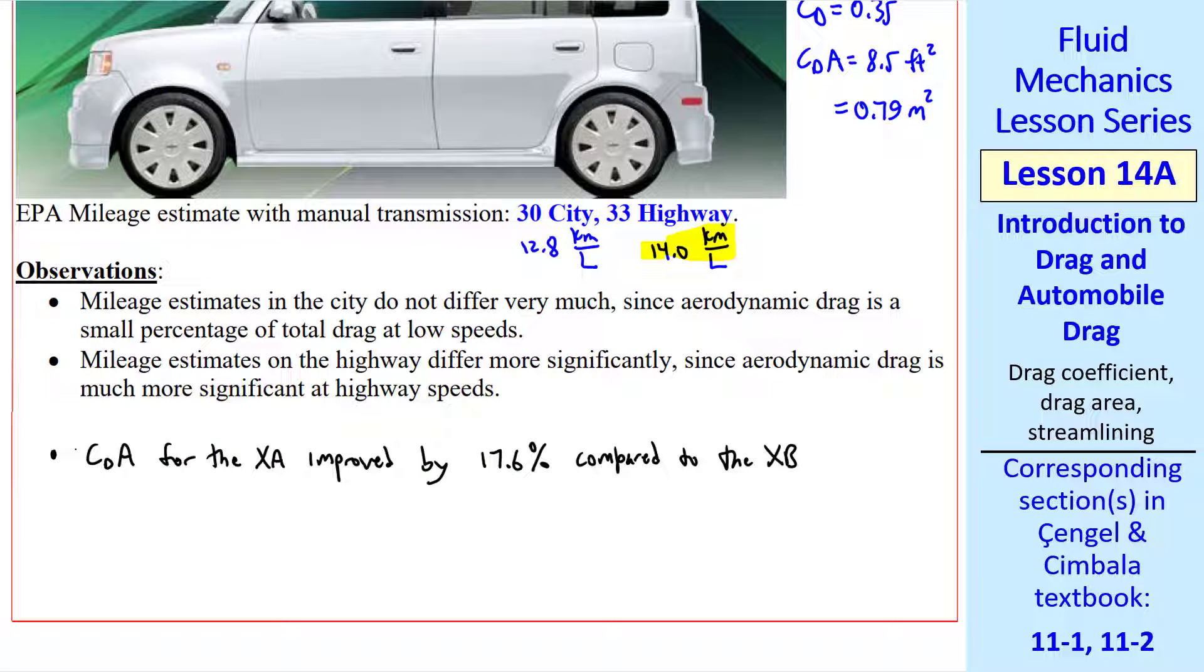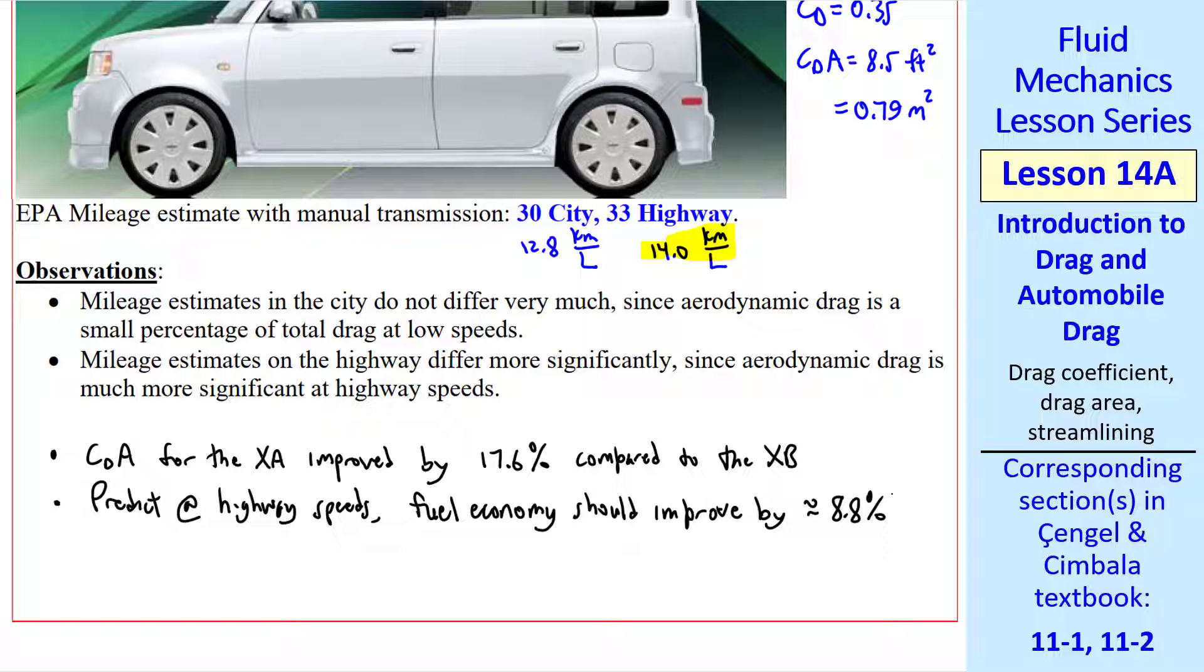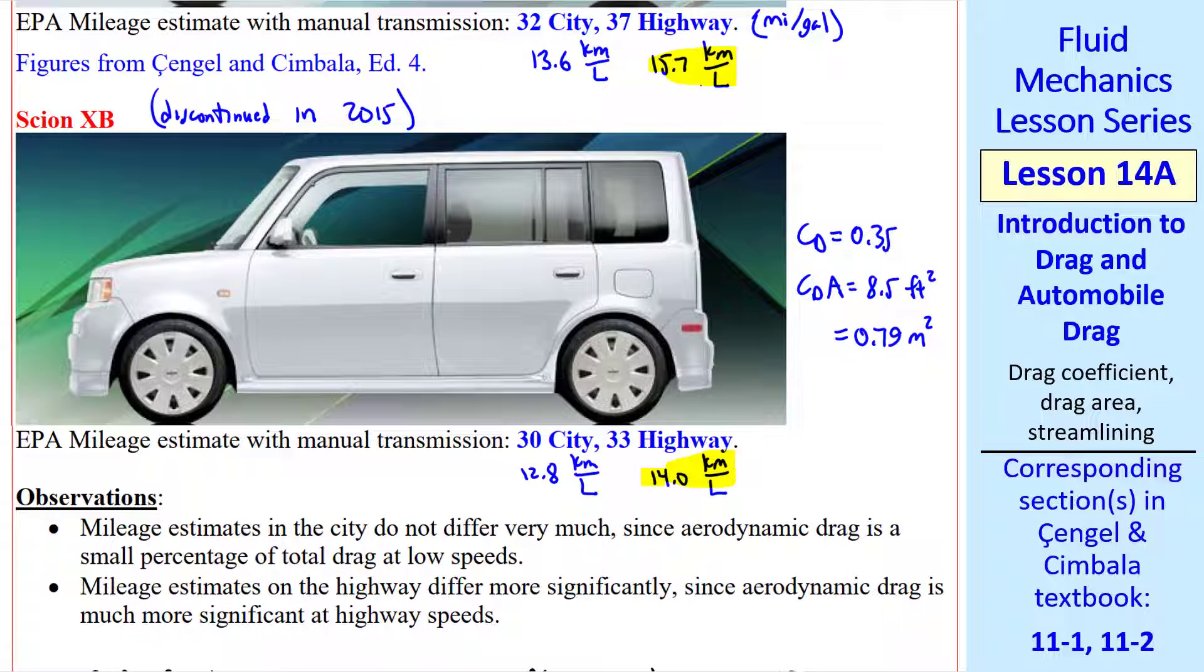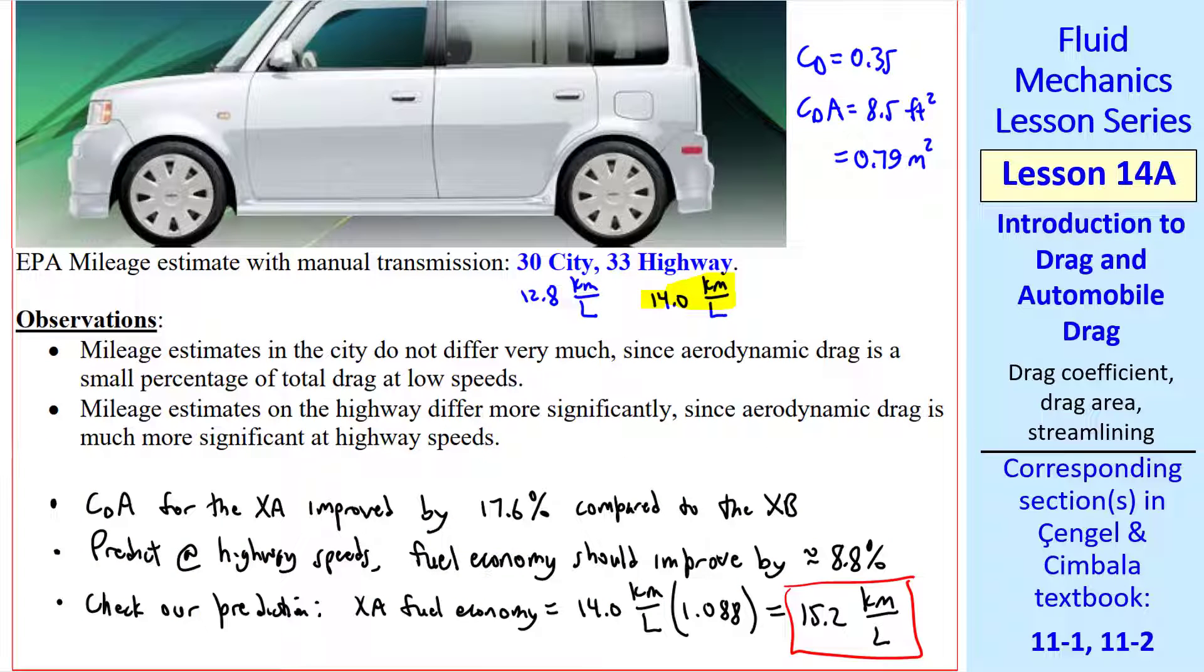We can do some quick calculations. The drag area for the XA improved by about 17.6% compared to the XB. So we predict that at highway speeds, the fuel economy should improve by about 8.8%, half of this amount. The XA fuel economy at highway speeds should be that of the XB, 14.0 km per liter, times 1.088, which is an 8.8% improvement. This gives us 15.2 km per liter. We compare that to the actual value of 15.7 km per liter.